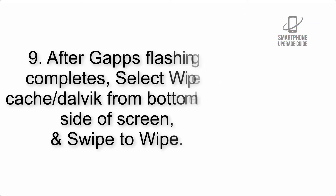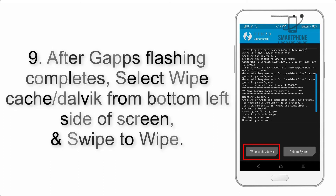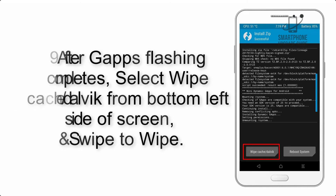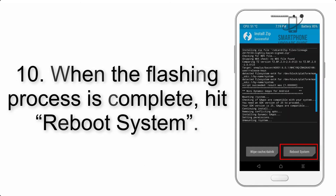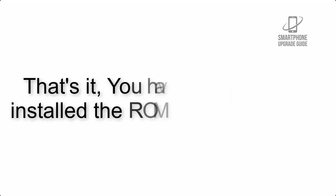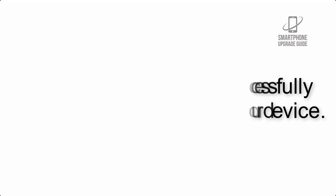Step 9: After GApps flashing completes, select Wipe Cache and Dalvik from the bottom left side of the screen and swipe to wipe. Step 10: When the flashing process is complete, hit Reboot System. That's it — you have successfully installed the ROM on your device.